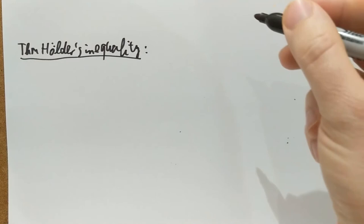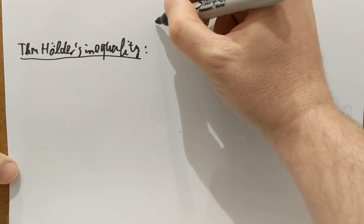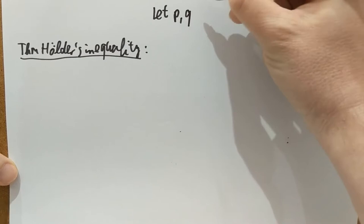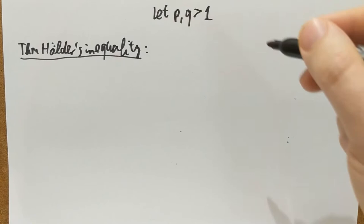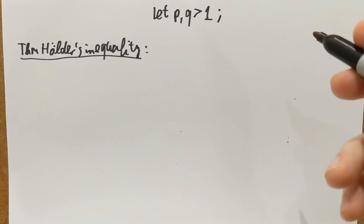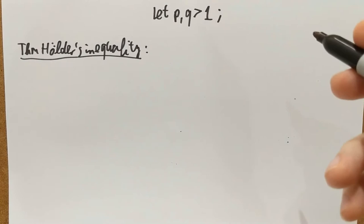Hölder's inequality says the following. It starts with the following assumption: let P and Q be real numbers larger than 1, and for the first time we're going to have a very different correspondence between P and Q. I'm going to assume here that 1 over P plus 1 over Q equals 1.